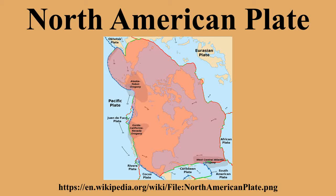The San Andreas Fault through California, the East Pacific Rise in the Gulf of California, and the Middle America Trench to the south. On its western edge, the Farallon Plate has been subducting under the North American Plate since the Jurassic period. The Farallon Plate has almost completely subducted beneath the western portion of the North American Plate, leaving the part of the North American Plate in contact with the Pacific Plate at the San Andreas Fault.